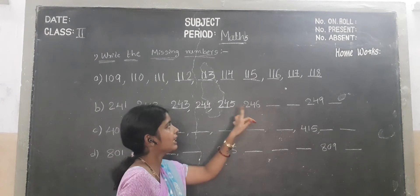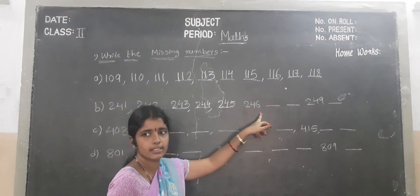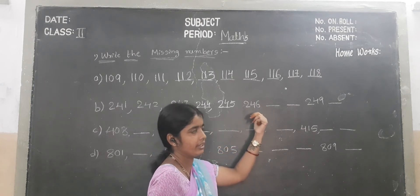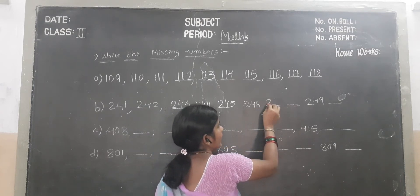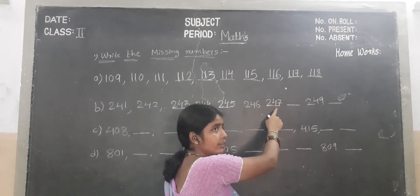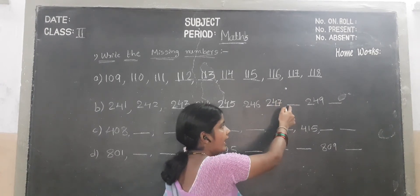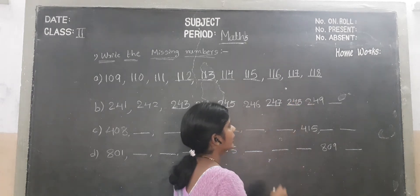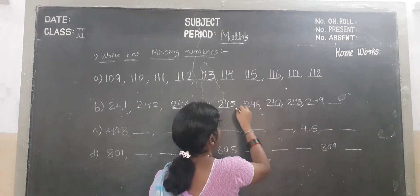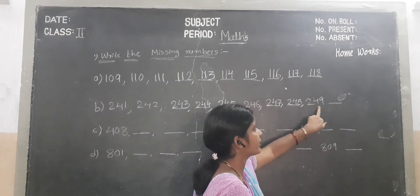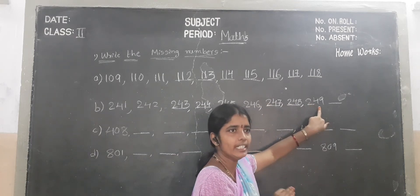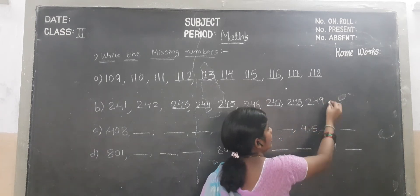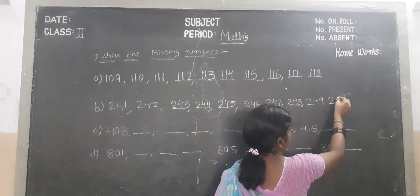245. We add 1 — which number will become? 246. We add 246 to number 1 — which number will become? 247. 247, 248. We add number 1 — which number will become? 248. We add number 1 — which number will become? 249. We add number 1 — which number will become? 250.